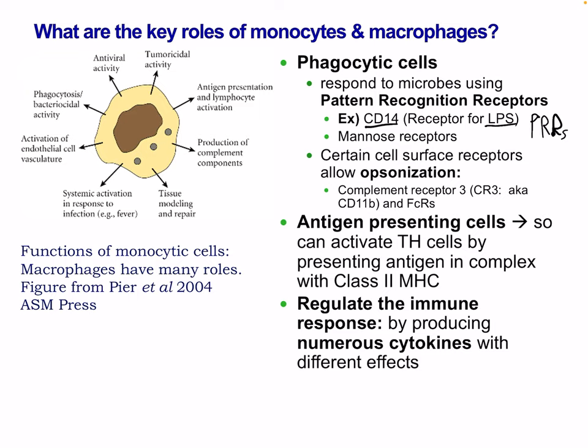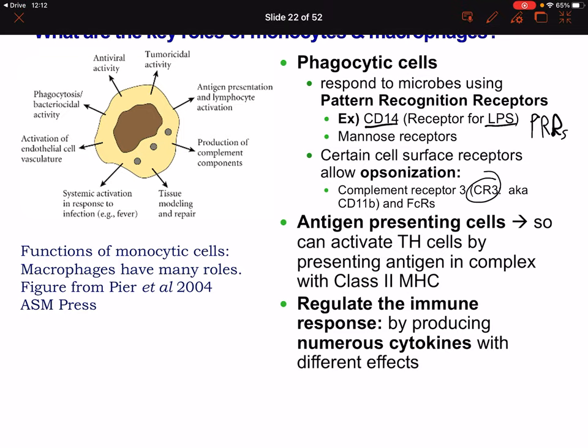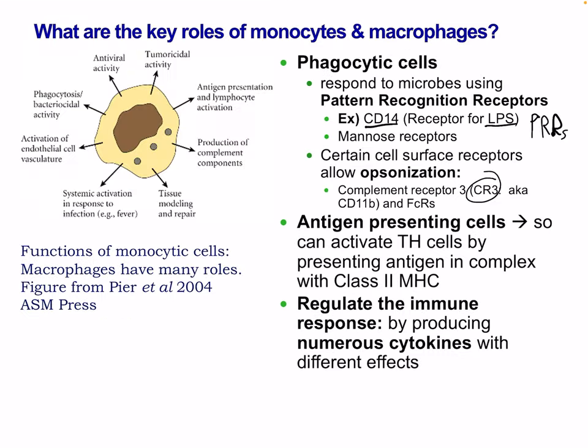Macrophages are important antigen-presenting cells. They can activate T helper cells by presenting antigen in complex with class 2 MHC. They also help regulate the immune response by producing numerous cytokines with different effects.